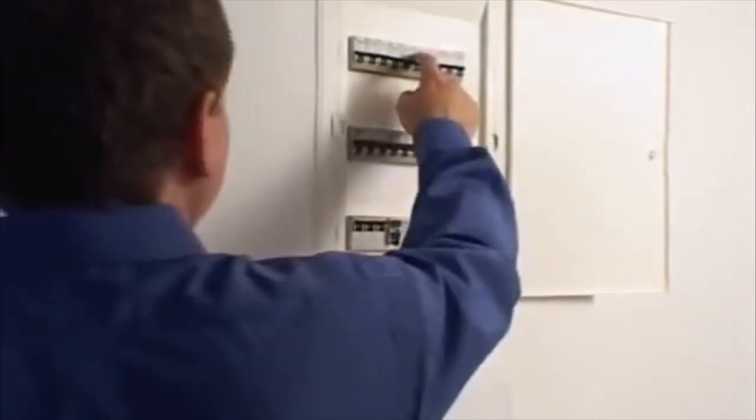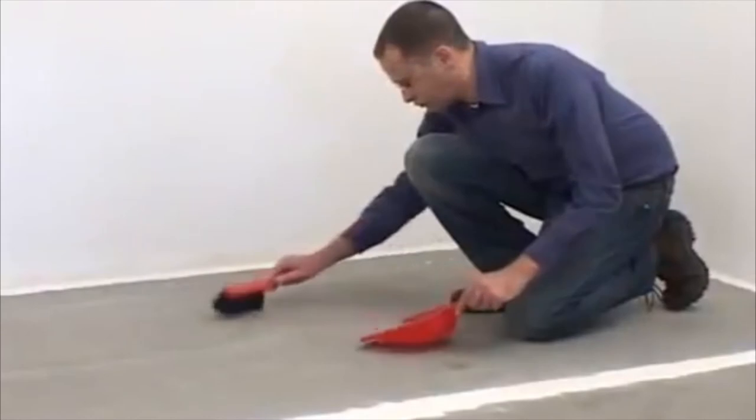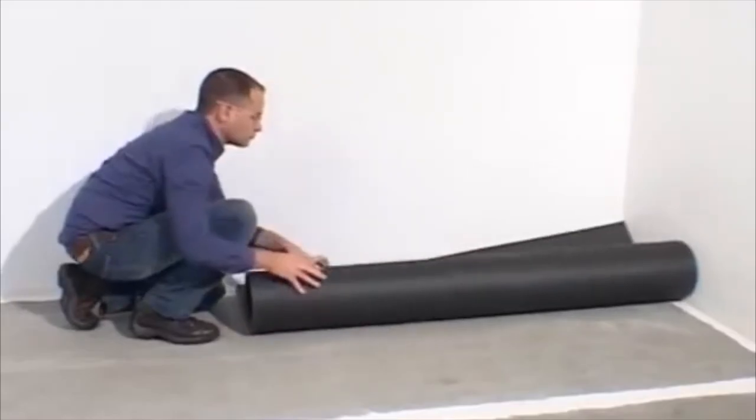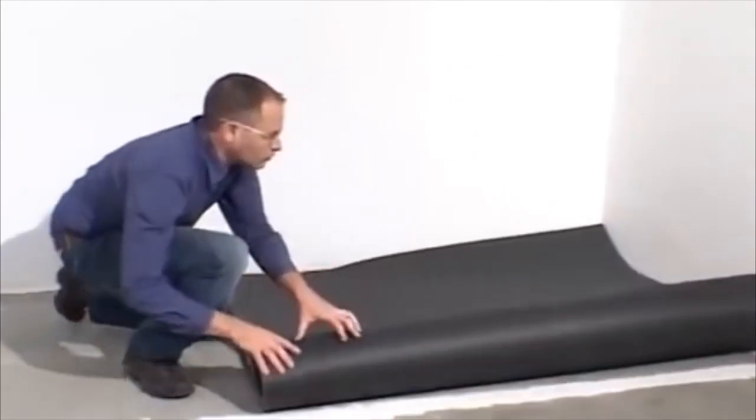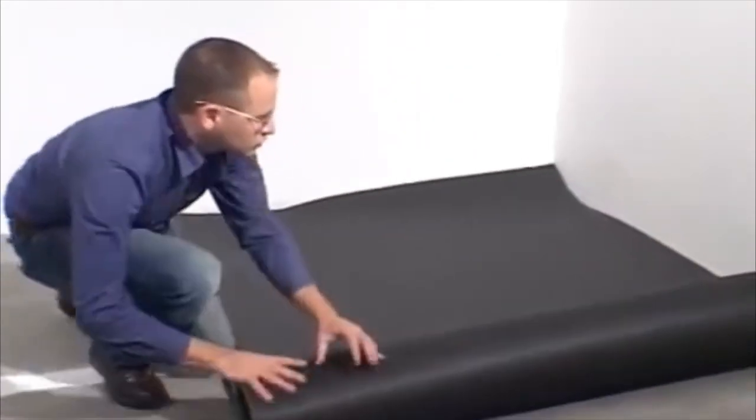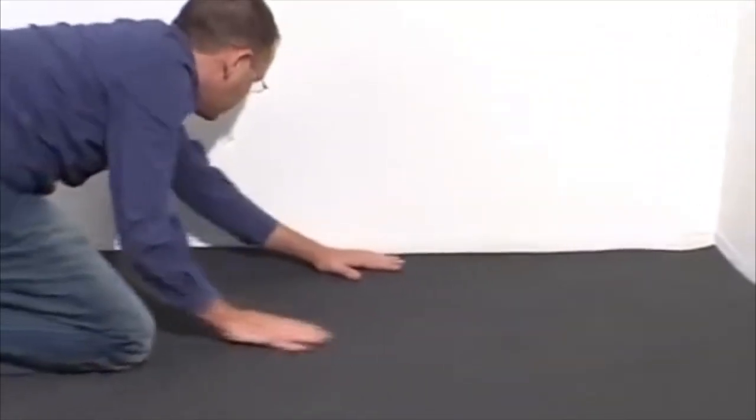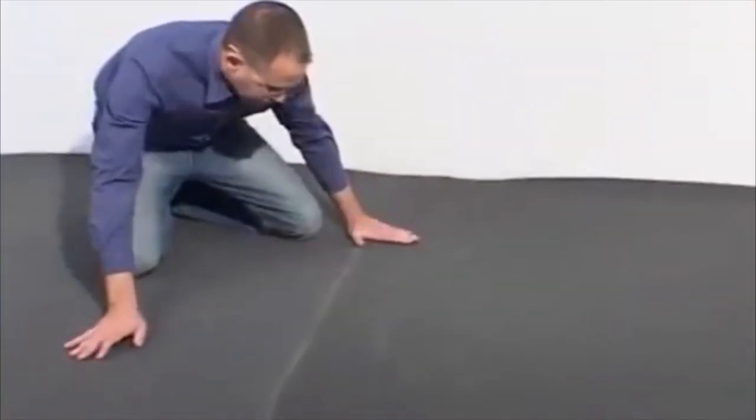Switch off the electricity mains. Ensure that the floor base is clean and clear of all debris. Depending on the type of flooring, place insulation material, in this case soft insulation, over the floor base. Consult our manual for the appropriate material for other floor types.